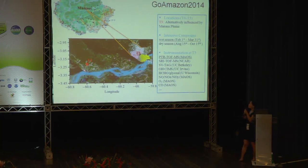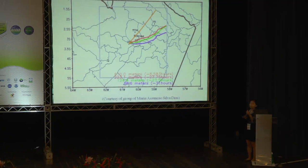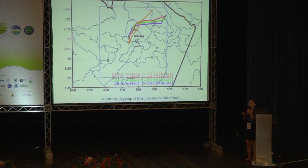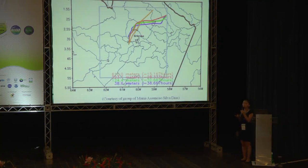Lindsay already gave a very good overview about the site. We are making measurements at T3. One thing I want to emphasize is that this location was very carefully chosen. If we look at the back trajectory, here is T3, and here is T1 in Manaus. We can see how the air mass sometimes comes from Manaus and sometimes from the surrounding forest. The fetch of T3 oscillates between the extreme of a pristine atmosphere and the interaction of pollution from Manaus with the natural environment.